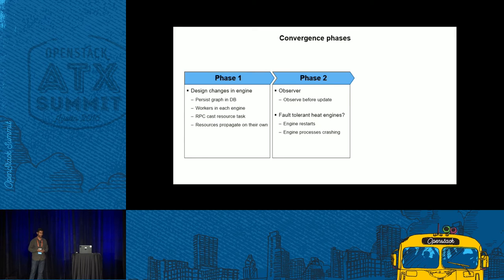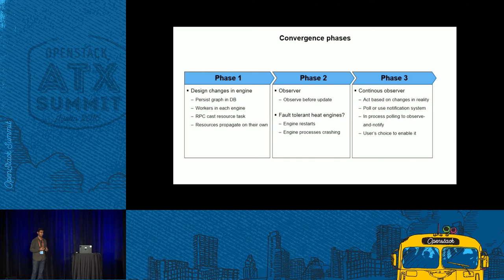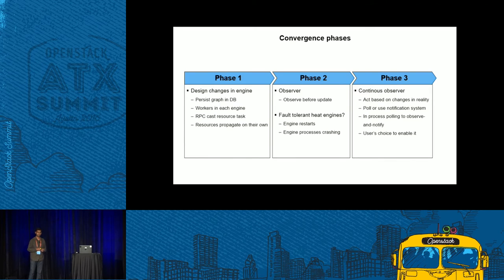Phase two: we thought we'd do the observer and a fault-tolerant heat engine. A fault-tolerant heat engine means that if one of the heat engine processes goes down, or the system reboots, it shouldn't affect the stacks in progress — users should not really see that these things happened in the back end. Phase three: we thought we'd do the continuous observer, which is still under discussion. The continuous observer continuously monitors provisioned resources — it continuously polls or listens to notifications, then decides what needs to be done and takes action to bring the stack back to the desired state declared in the template.